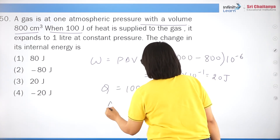Question 24: heat is a path function while internal energy is a state function. Heat and work are path functions, but internal energy is a state function. Correct answer is option 2.